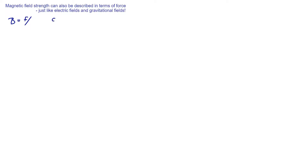We've seen that magnetic field strength can be described in terms of flux density. It can also be described in terms of force, and this is very similar to how we describe electric field strength and gravitational field strength. For example, magnetic field strength B is the force per unit something, just like gravitational field strength G is force per unit mass, which you'll recognise from F equals mg. Electric field strength is force per unit charge. So field strength is always the force per unit something.